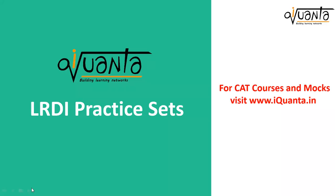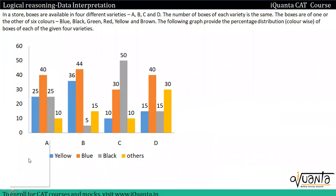Hi everyone, in this video we will understand how we can solve such type of sets. In this set, we are given that in a store boxes are available in four different varieties A, B, C and D. The number of boxes of each variety is same. Variety A may have number of boxes x and variety B, C or D may have number of boxes x.